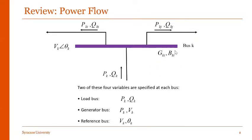G and B are the transmission line parameters, and V and theta are the bus voltage and bus angle respectively. To obtain power flow of a system, two of these four variables should be specified at each bus: P and Q for load buses, P and V for generator buses, and V and theta for reference buses.